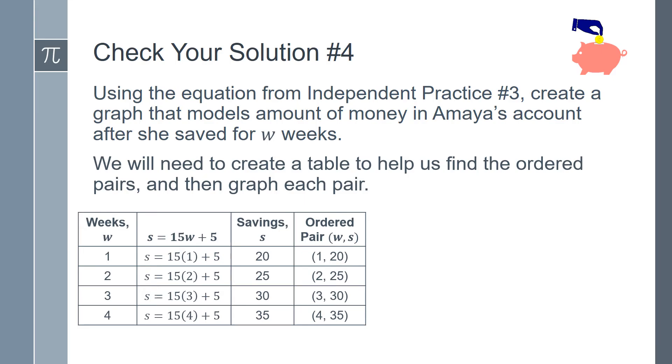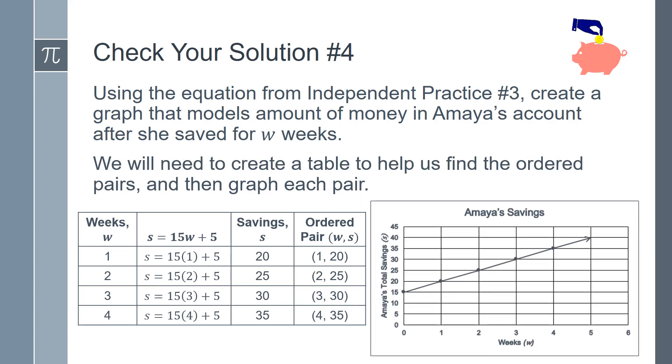Now we can graph this on a coordinate grid. And you'll notice that the line is increasing as you move to the right. She started with $15 after 0 weeks and increased by $5 each week after that. Remember that if she keeps saving, this line will keep going up, so we put an arrow on the end to indicate this.